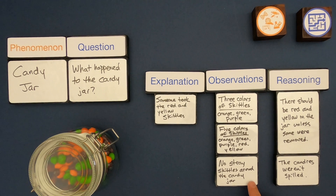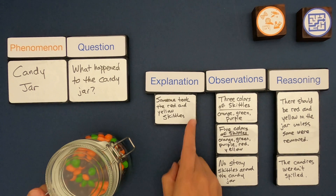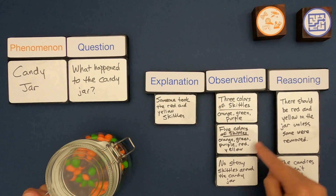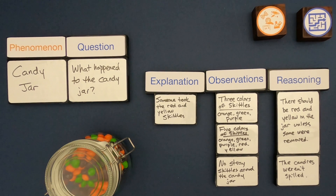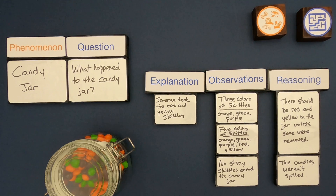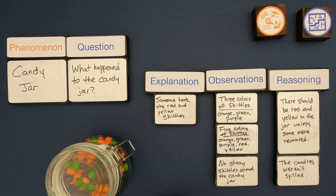The next observation — that there were no stray Skittles around the candy jar — tells me the candies weren't spilled, so we didn't lose the red and yellow that way. Reading the full explanation from left to right: someone took the red and yellow Skittles; I had three colors in the candy jar but five colors in the bag, and there should be red and yellow unless some were removed; and no stray Skittles were found, so they weren't spilled. This reasoning is hard and takes practice with concrete examples.